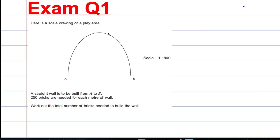Here is a scale drawing of a play area. The scale, in this case, is 1 represents 800. A straight wall is built from A to B. 250 bricks are needed for each metre. Work out the total number of bricks needed.